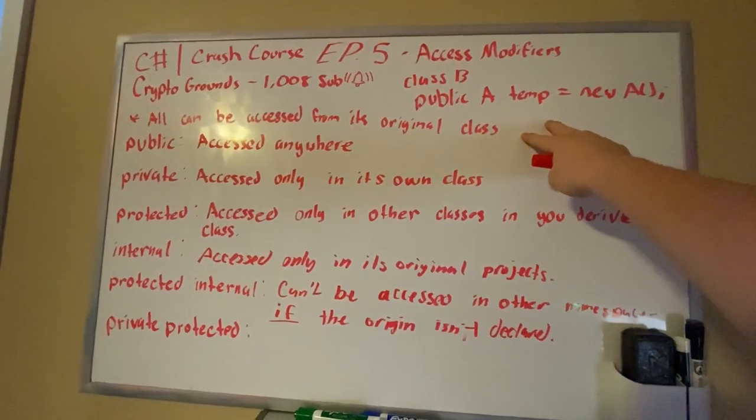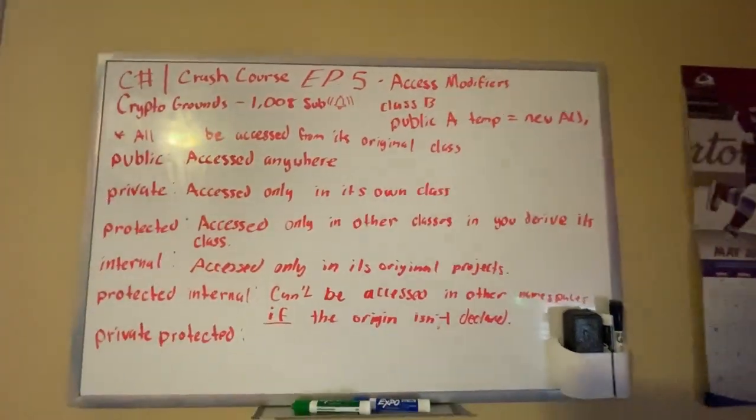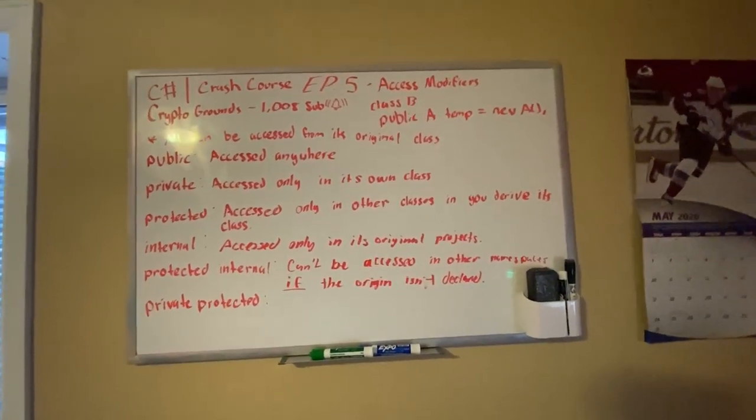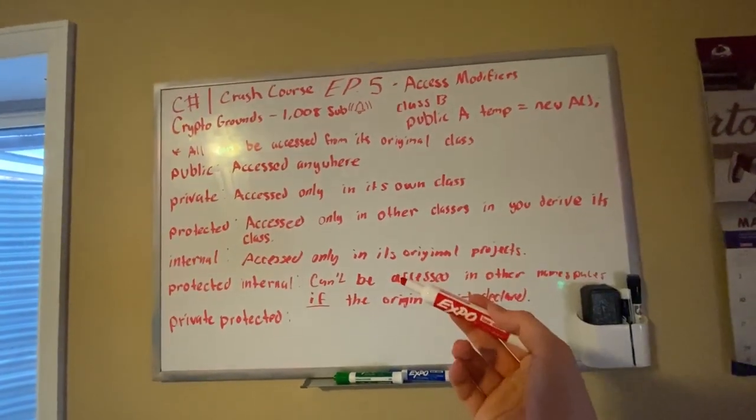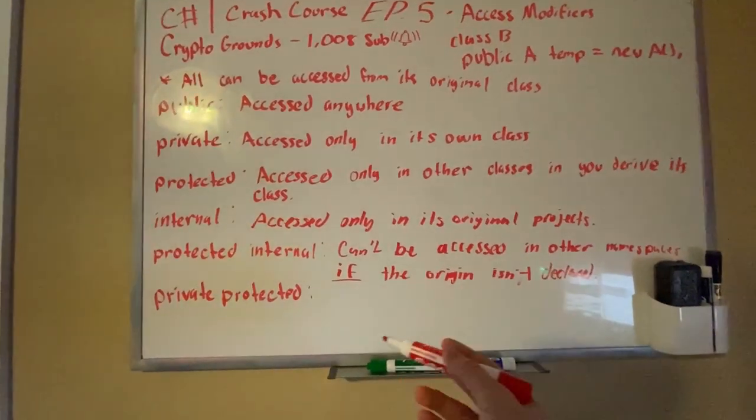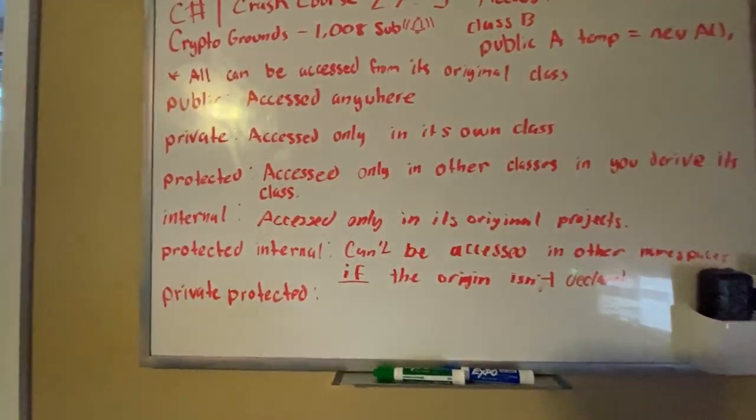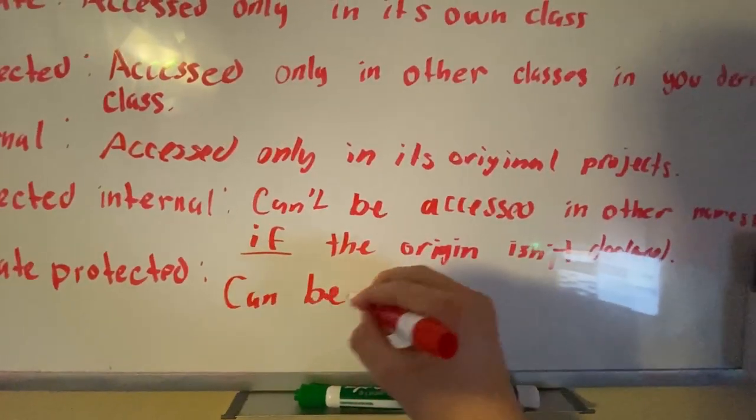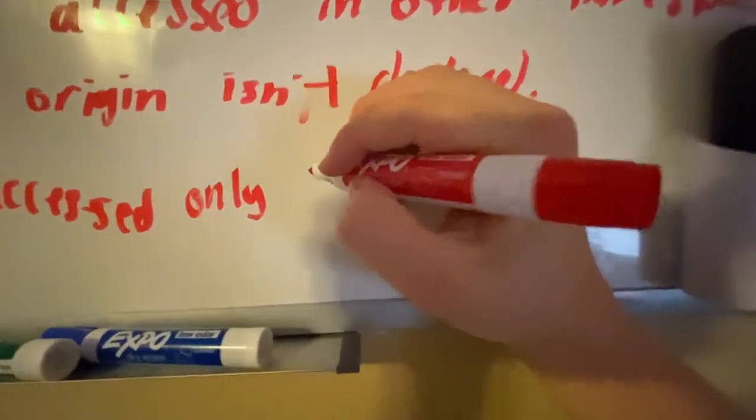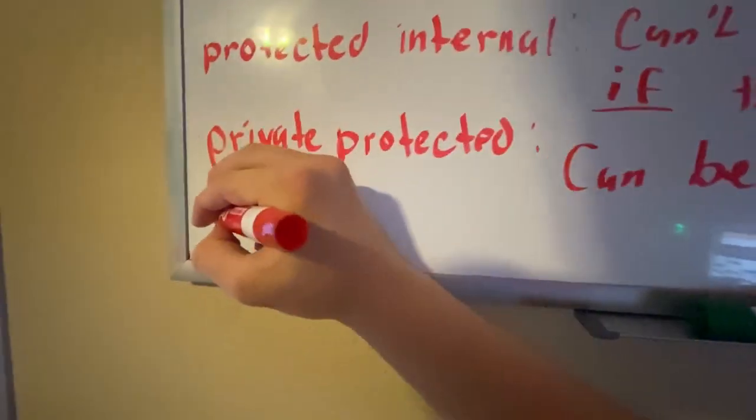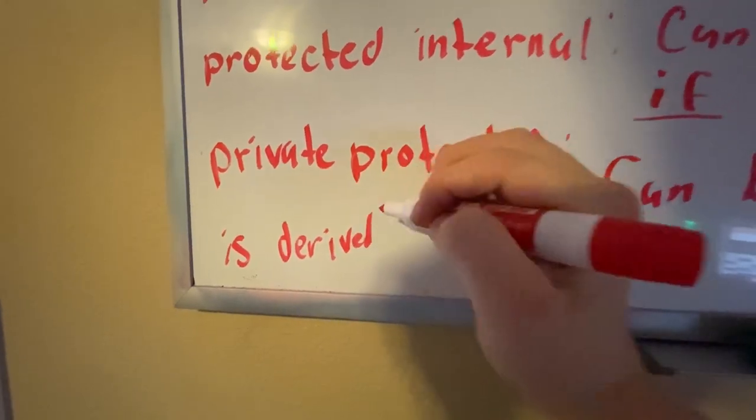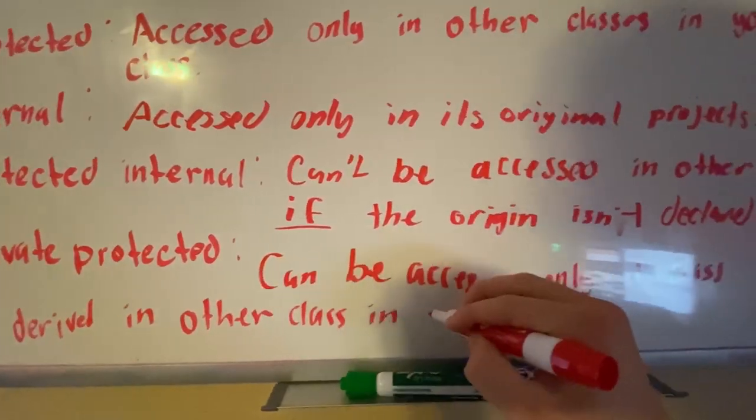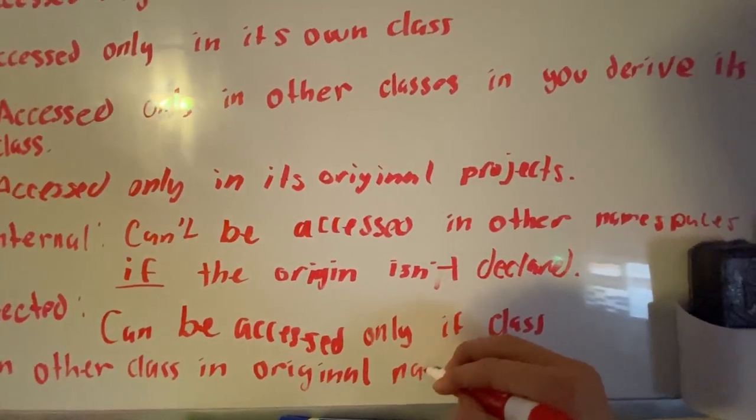Private protected is the same thing as private where it can't be accessed anywhere outside of your project. Since private can only be accessed in its own class, private protected is like that as well. However, if you derive the class inside your own project, then it can be used. So basically it's a step up from private protected in a way. Can be accessed only if class is derived in other class in original namespace slash project.